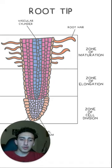The zone of division is where new cells are synthesized. The zone of elongation is where the cells absorb water and elongate. And the zone of maturation is where these cells differentiate into their final forms.